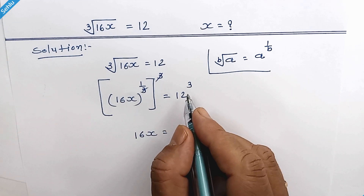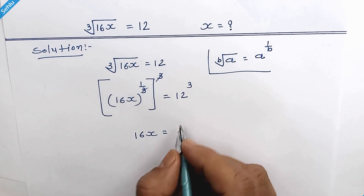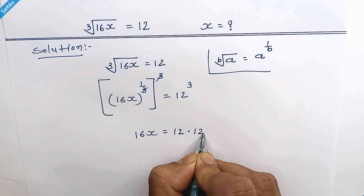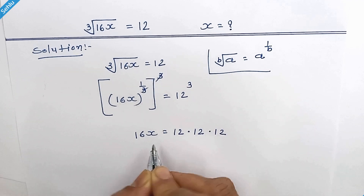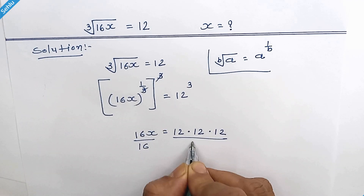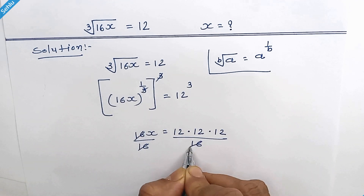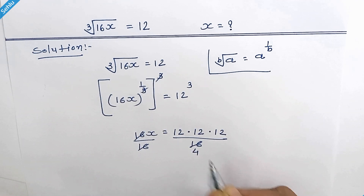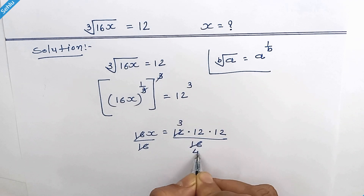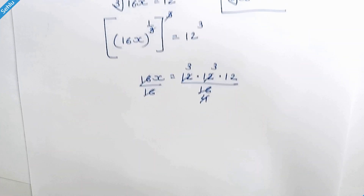And if you don't know what 12 cubed is, no problem. Let's go ahead with this: 12 times 12 times 12. If we divide by 16 on both sides, these two get cancelled out. And 4 fours are 16, 4 threes are 12.